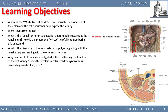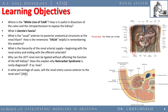Why can the left renal vein be ligated without affecting left kidney function? There are a variety of tributaries into the left vein — most notably the gonadal vein and others. Nutcracker syndrome is where the superior mesenteric artery overlies the left renal vein and pinches it, causing some congestion on the left kidney. The presence of these tributaries helps explain why nutcracker syndrome is rarely diagnosed. The renal artery is anterior to the renal vein in about 30% of cases.